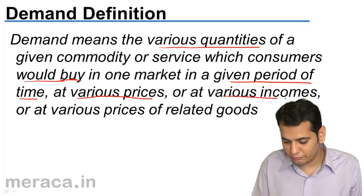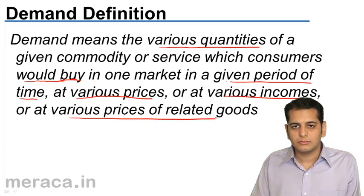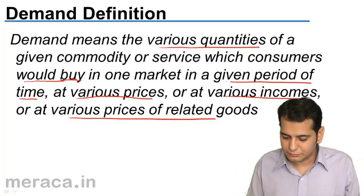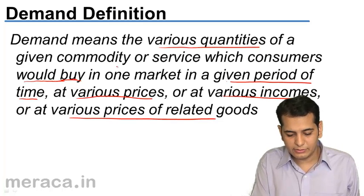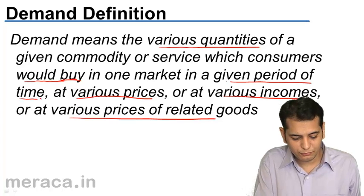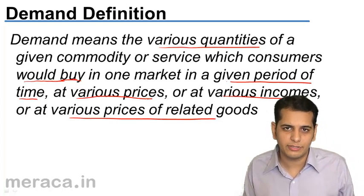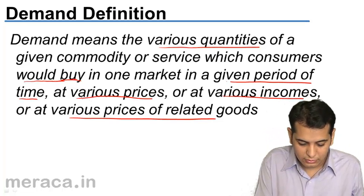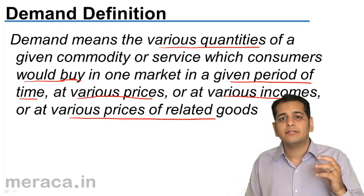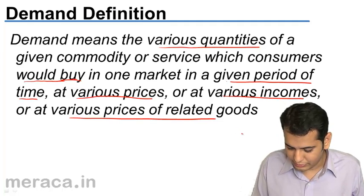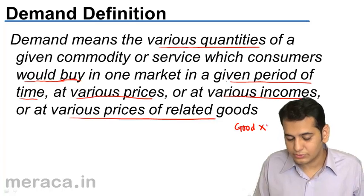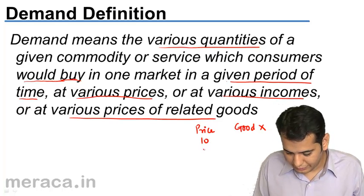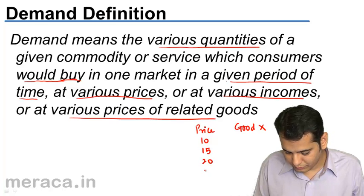Demand is always expressed in terms of price and in terms of period. So demand is various quantities that a consumer is willing to buy in a given period of time and at various prices. Demand is different at different levels of prices — we purchase different quantities at different price levels. Let's say we are purchasing a good X and the price for this good varies: 10 rupees, 15 rupees, 20 rupees, 25 rupees, and 30 rupees.